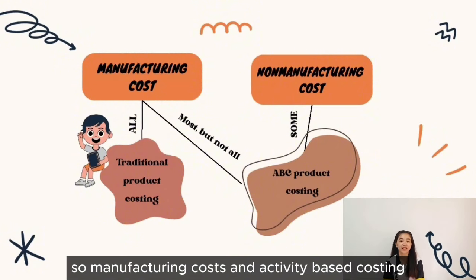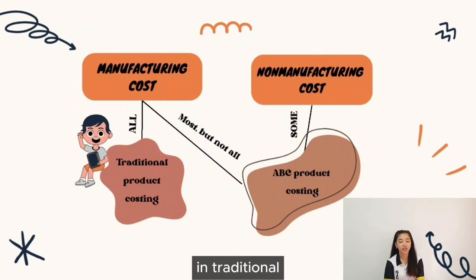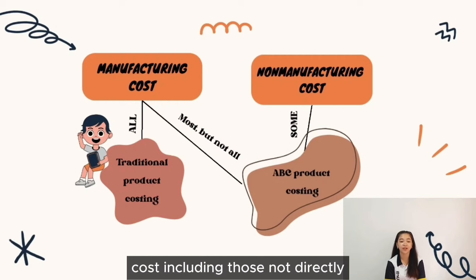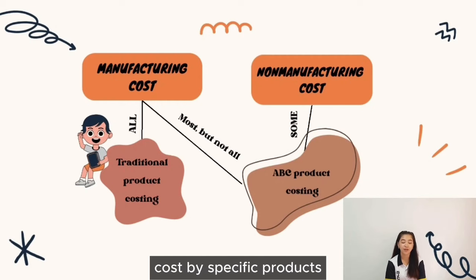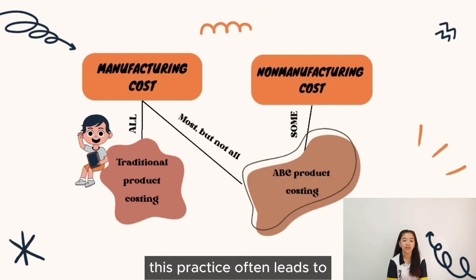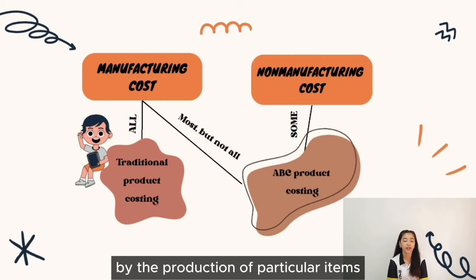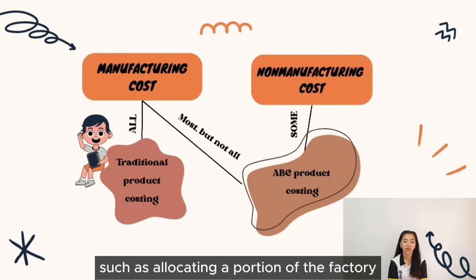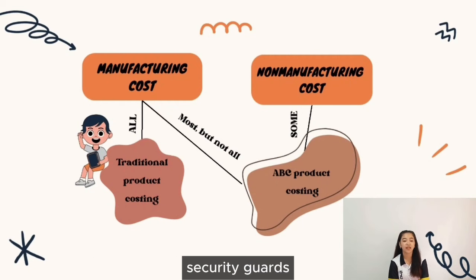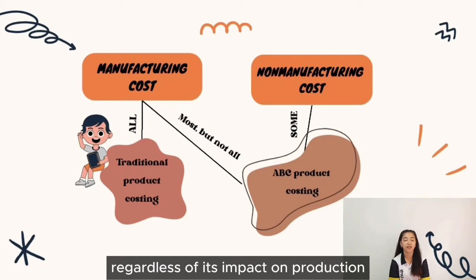In manufacturing costs and Activity-Based Costing, in traditional cost accounting, all manufacturing costs — including those not directly caused by specific products — are assigned to products. This practice often leads to the allocation of costs that may not be influenced by the production of particular items, such as allocating a portion of the factory security guard's wages to each product regardless of its impact on production.